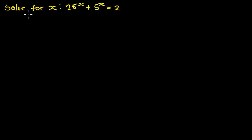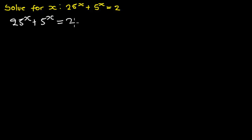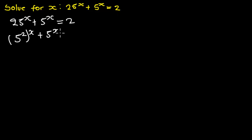Now we are given 25 exponent x plus 5 exponent x is equal to 2. From here we can rewrite 25 as 5 exponent 2, all exponent x, plus 5 exponent x is equal to 2.